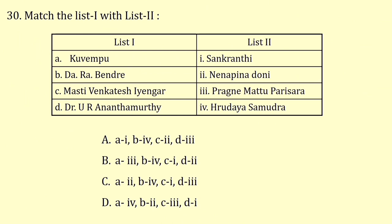Match list 1 with list 2. The book written by Kuvempu is Nenapina Dhoni. By Dharabendra is Pradaya Samudra. And by Ananthamurthy is Pradney Mathu Parisala. The correct option is option C.